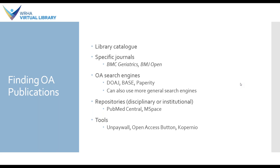Another source for finding OA publications are OA-specific search engines. There are many, but examples include DOAJ — the Directory of Open Access Journals — BASE, Paper T, and you can also use more general search engines such as Google Scholar to find open access sources. We have a handout on our website about Google Scholar specifically that you can refer to for more information.